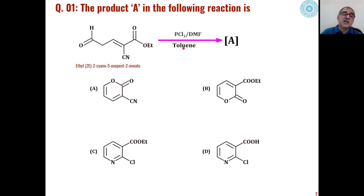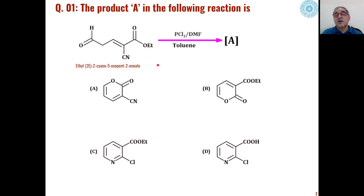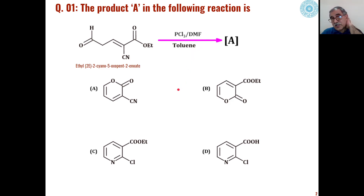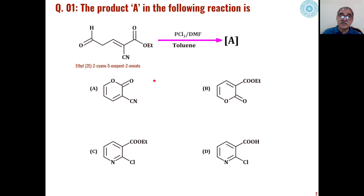In this lecture, the first problem is how the substituted cyano-oxypentene ester, on reaction with phosphorus trifluoride in presence of dimethylformamide using toluene as solvent, can be converted into heterocyclic products. Out of four choices, one product can be formed through cyclization reactions under these conditions, and we can synthesize heterocyclic compounds.